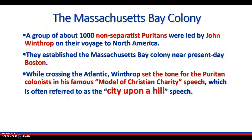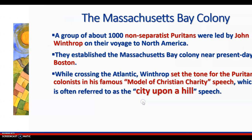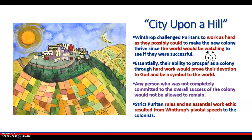The Massachusetts Bay Colony. A group of about 1,000 non-separatist Puritans were led by John Winthrop on their voyage to North America. They established the Massachusetts Bay Colony near present-day Boston. While crossing the Atlantic, Winthrop set the tone for the Puritan colonists in his famous 'Model of Christian Charity' speech, often referred to as the 'City Upon a Hill' speech. Winthrop challenged the Puritans to work as hard as they possibly could to make a new colony thrive, since the world would be watching to see if they would be successful. Their hard work would prove their devotion to God and be a symbol to the world. Any person not completely committed to the overall success of the colony would not be allowed to remain.